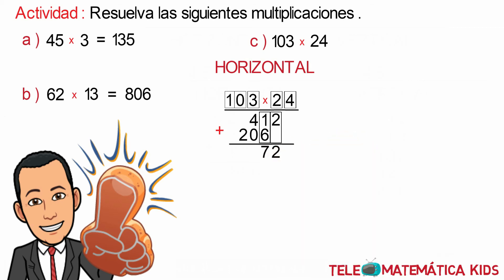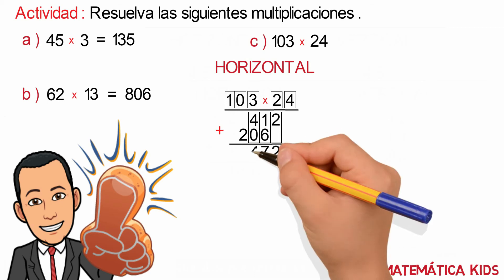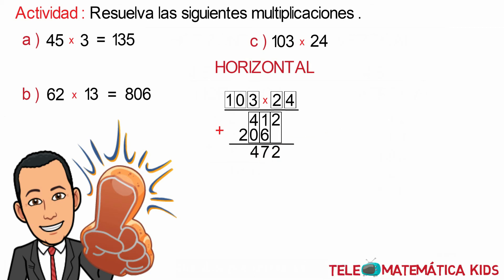We continue with the sum of the elements of the next column: 4 plus 6 equals 4. Lastly, the elements of the next column: 0 plus 2 equals 2, and this would be the final result.